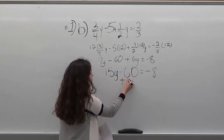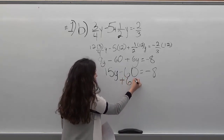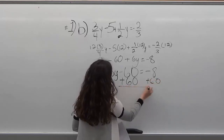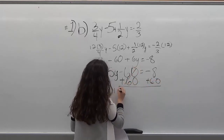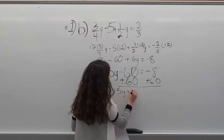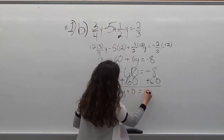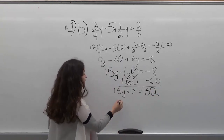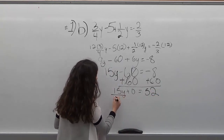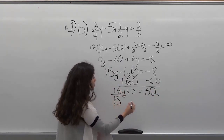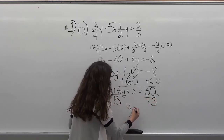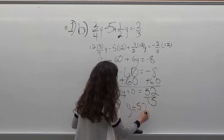So now the next step would be to add 60 on both sides. Over here you're going to get 15y plus 0 equals 52. And now your final step would just be to divide by 15 on both sides. And since you can't simplify that further, your solution would just be 52 over 15.